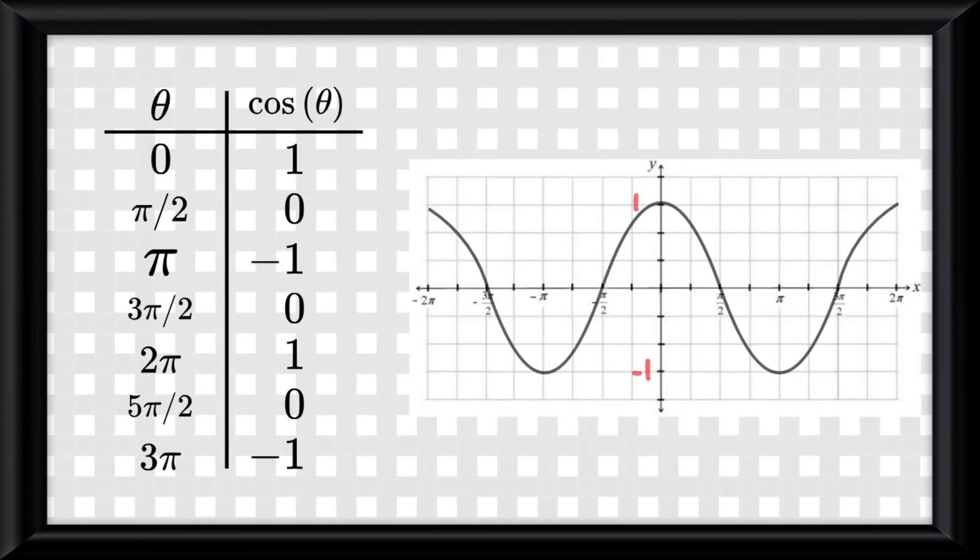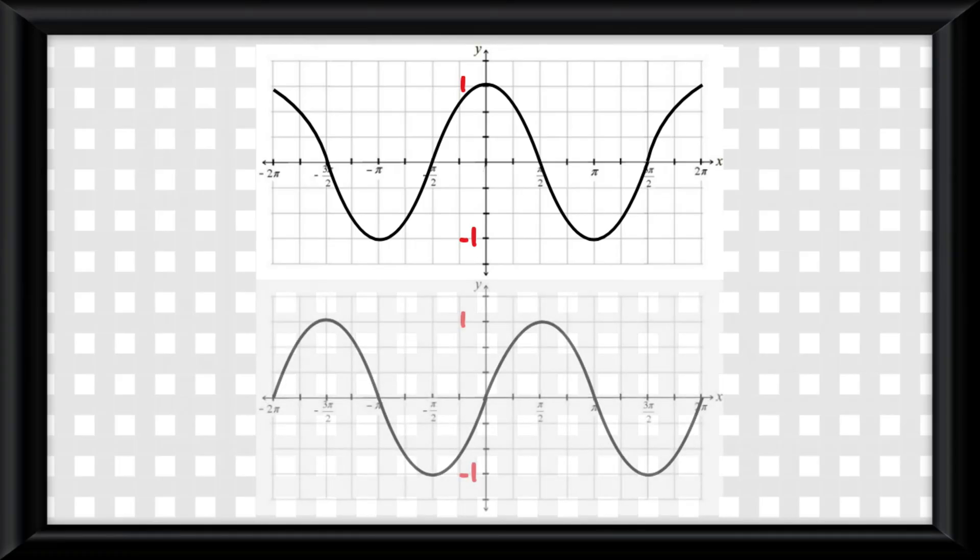Now let's graph cosine and all of its values. You see that the graph looks practically the same to the sine graph. That is because it basically is!